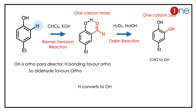In the Dakin reaction, you have alcohol formation. So hydrogen converts to aldehyde, then into alcohol. CHO to OH happens in the Dakin reaction; hydrogen to aldehyde happens in the Reimer-Tiemann reaction. The key concept here is that mesomeric effect is stronger than inductive effect, because mesomeric effect donates full electrons while inductive effect donates only partial electrons.